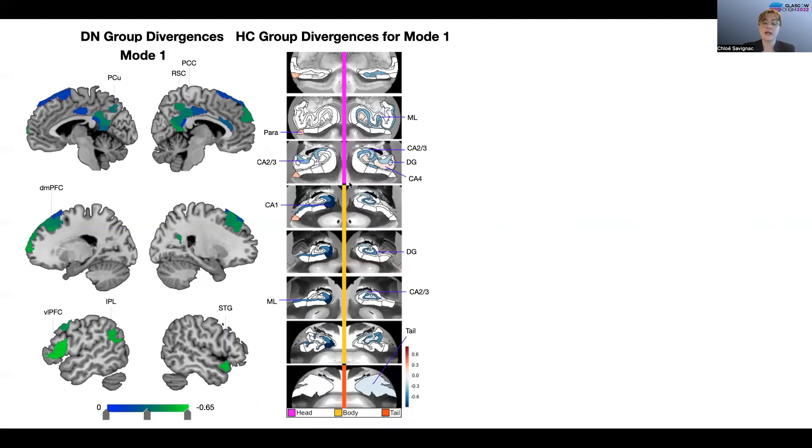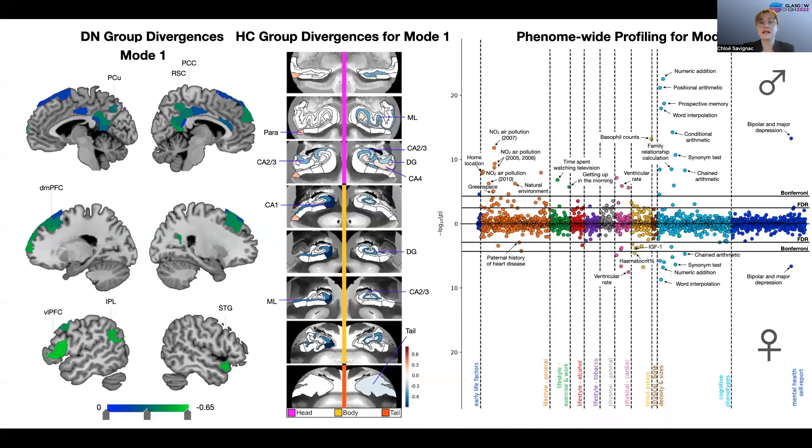We next perform a phenome profiling to see how individual expression of mode 1 was related to a thousand UK Biobank traits across 11 lifestyle categories. So I'm showing the results of these analyses that were conducted in males and females separately.